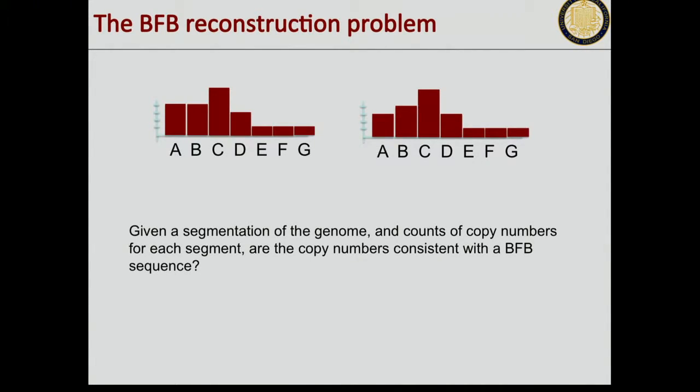This is the clean version, and of course you have to add noise and be able to resolve this. Just to say this is an interesting combinatorial problem, you can see these two counts are very similar. Here I've reduced the count of A by one. This one admits a BFB while this one doesn't. Actually, you can show that all even numbers must follow before odd numbers.